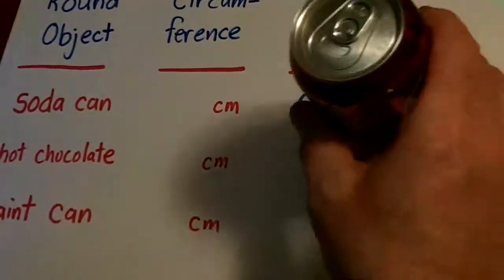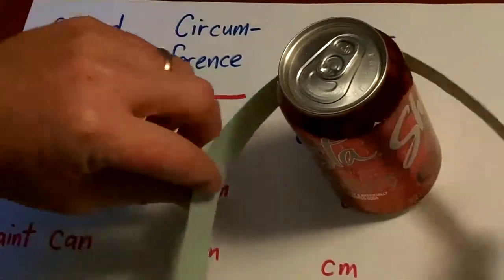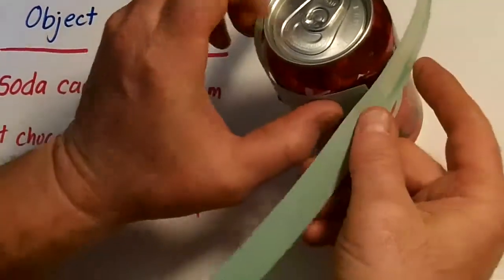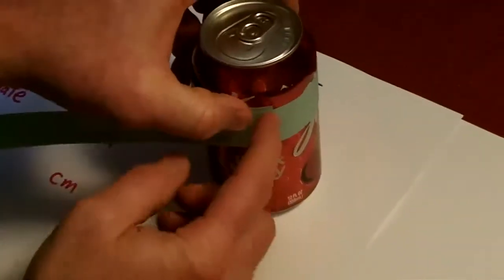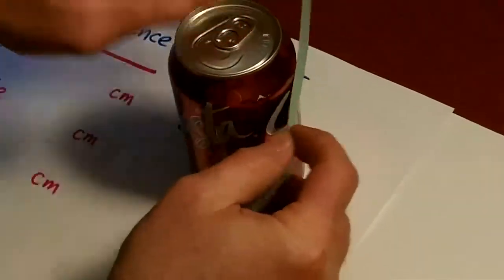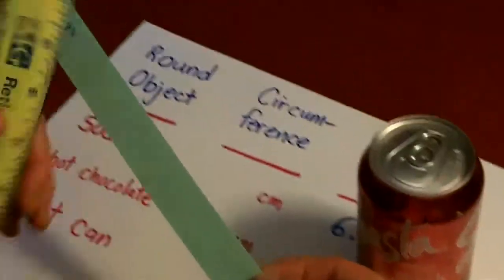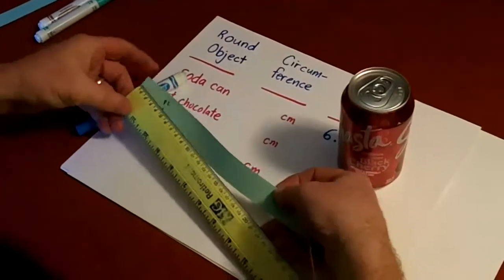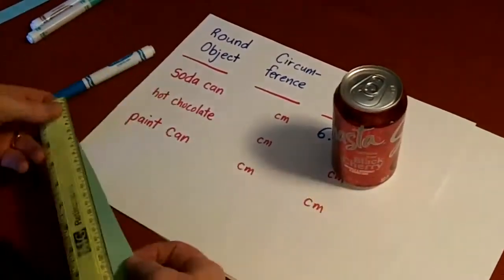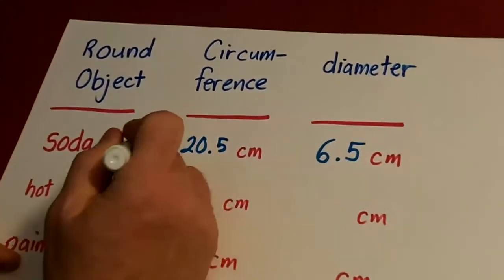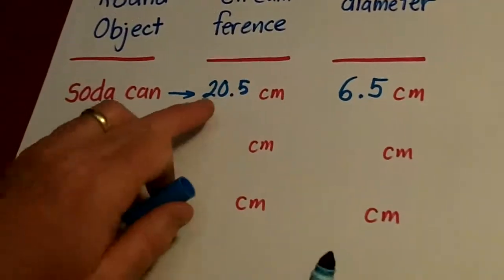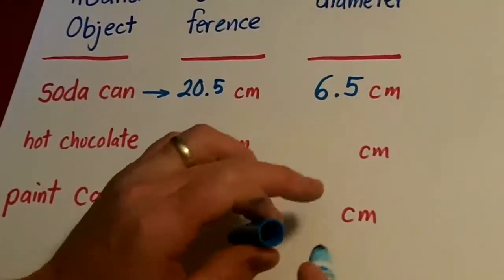If we take our little measuring band here and we measure around just like this, that measurement right there, if we measure it with our centimeters, it's going to come out to exactly 20 1⁄2 centimeters. So the soda can worked out to a circumference of this, a diameter of this.